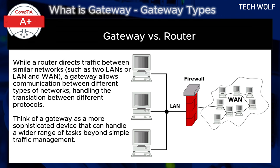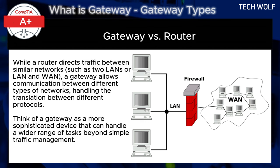In summary, a gateway is a critical network device that facilitates communication between different networks and protocols. It converts data formats, translates addressing, and ensures smooth interaction between incompatible networks such as a LAN and the internet. A gateway often performs additional functions like security and traffic management, playing a crucial role in both home and enterprise networks.